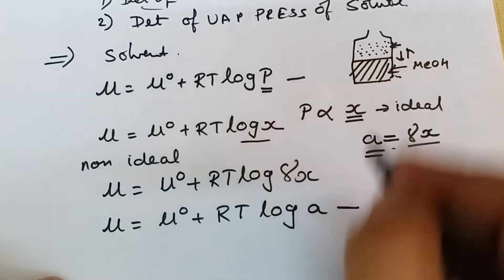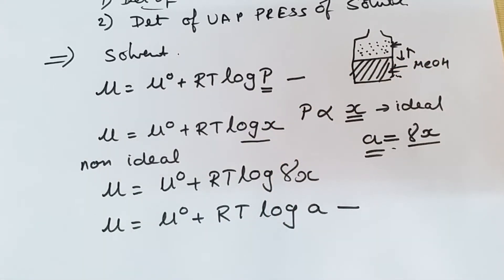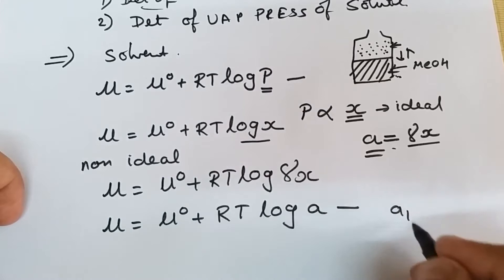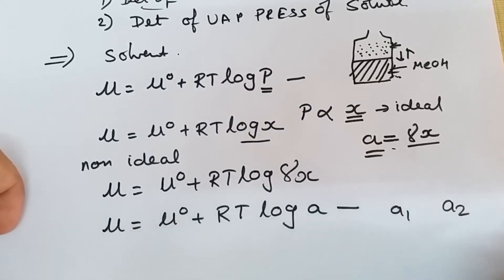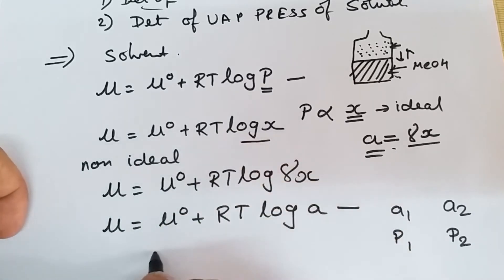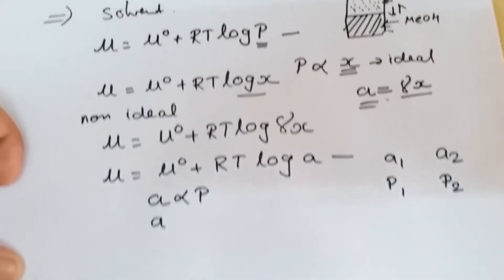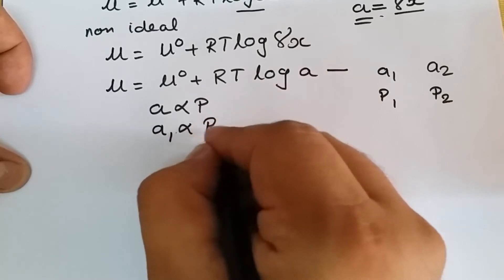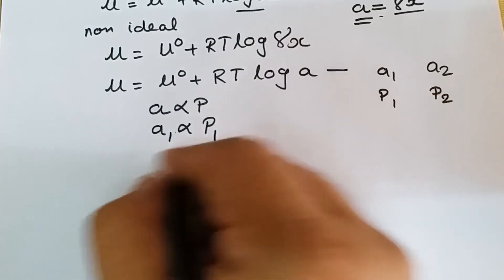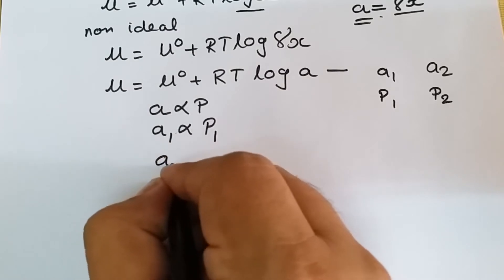By comparing the two equations, we can write that activity is proportional to vapor pressure. If a₁ is the activity of the solvent, p₁ is the vapor pressure of the solvent, and a₂, p₂ correspond to the solute, then by comparing both equations we can write: activity a₁ is proportional to vapor pressure p₁.